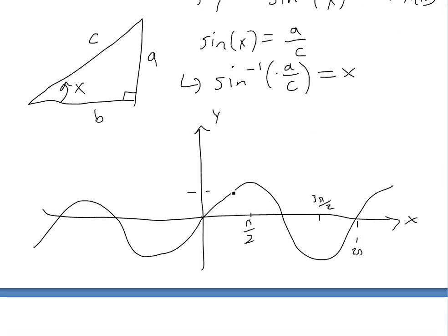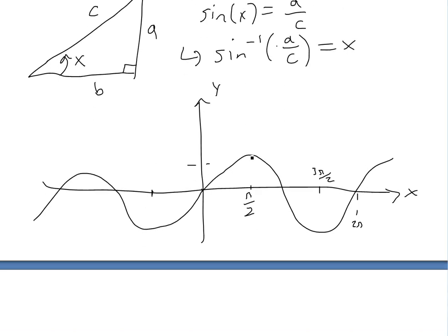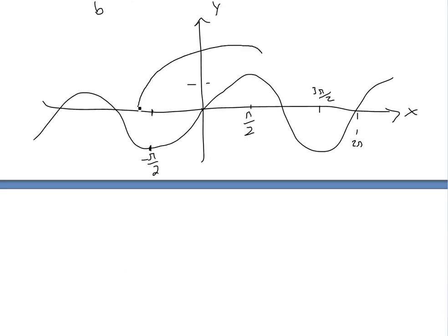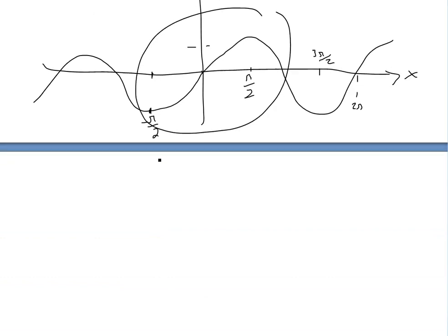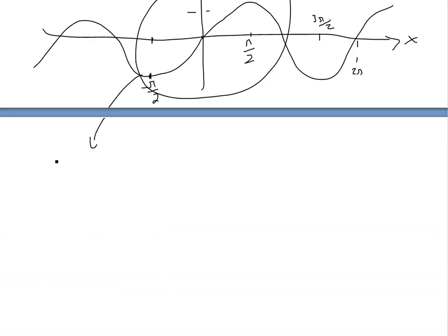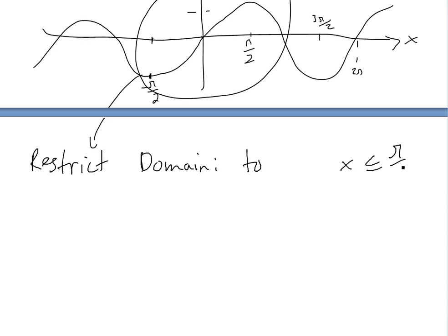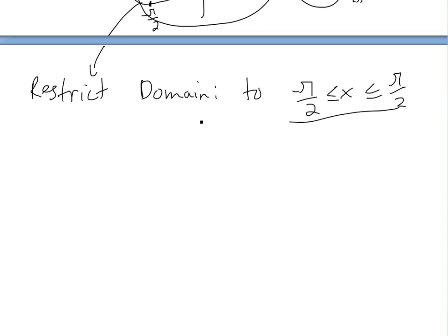So what you do here is actually specify a range — you take a range and restrict the domain. Most commonly we restrict from negative pi over 2 to pi over 2. So we only take this section, and we restrict the domain so that x is between negative pi over 2 and pi over 2. This gives us a one-to-one relationship.